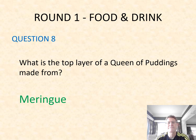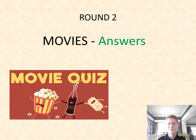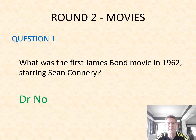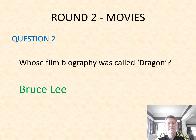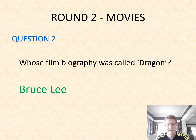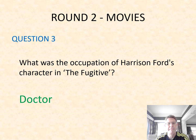So that's food and drink. Round two — here are the answers for your movie questions. Number one: what was the first James Bond movie in 1962 starring Sean Connery? It was Dr. No. Question two: whose film biography was called Dragon? Bruce Lee — it was his biography. Number three: what was the occupation of Harrison Ford's character in The Fugitive? He was a doctor.